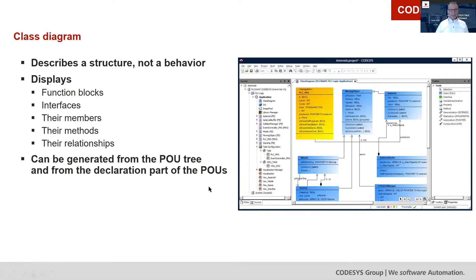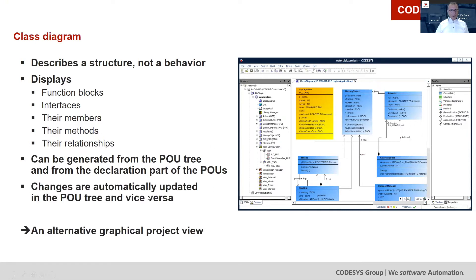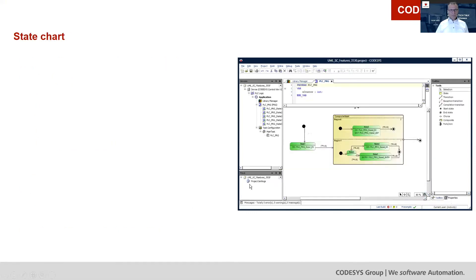As you've seen, class diagrams can be generated from the POU tree and the declaration parts of POUs, and changes are automatically updated in the POU tree and vice versa — so it's an alternative graphical project view. Now let's go to the state chart, which is a new graphical language for states and transitions.